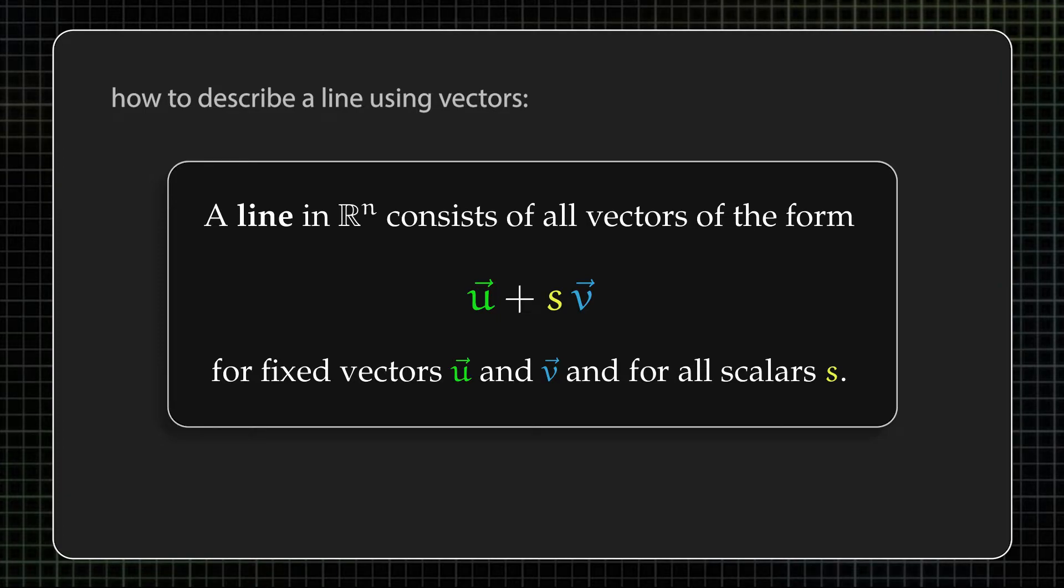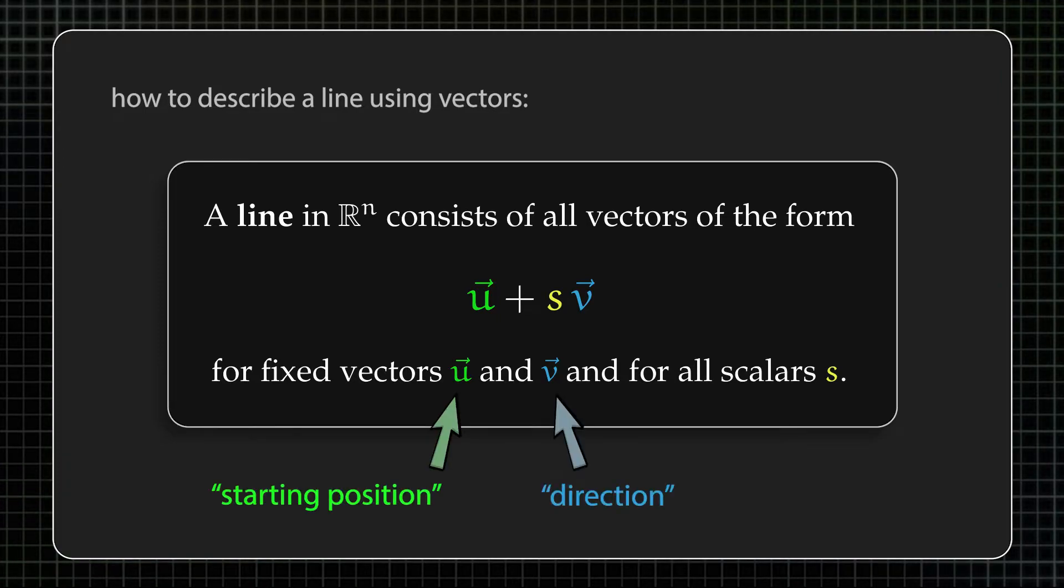If you pick two fixed vectors u and v, then a line in R^n is all vectors of the form u plus s times v, where s is a real number.